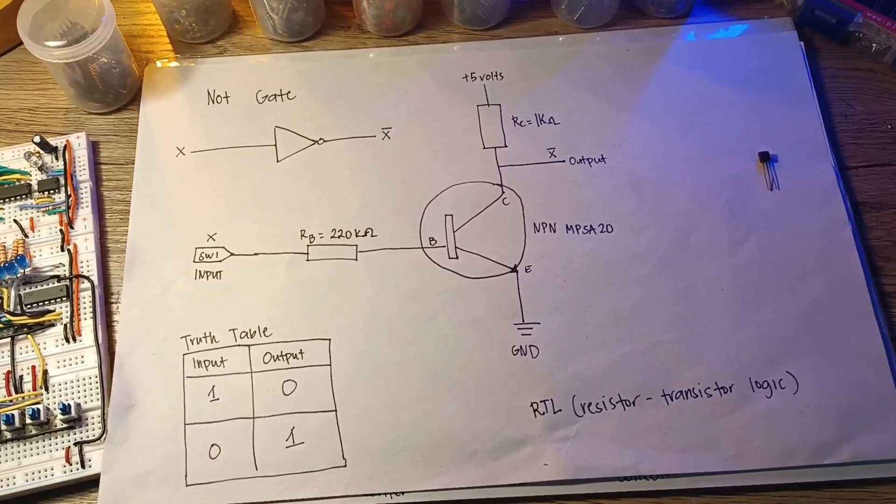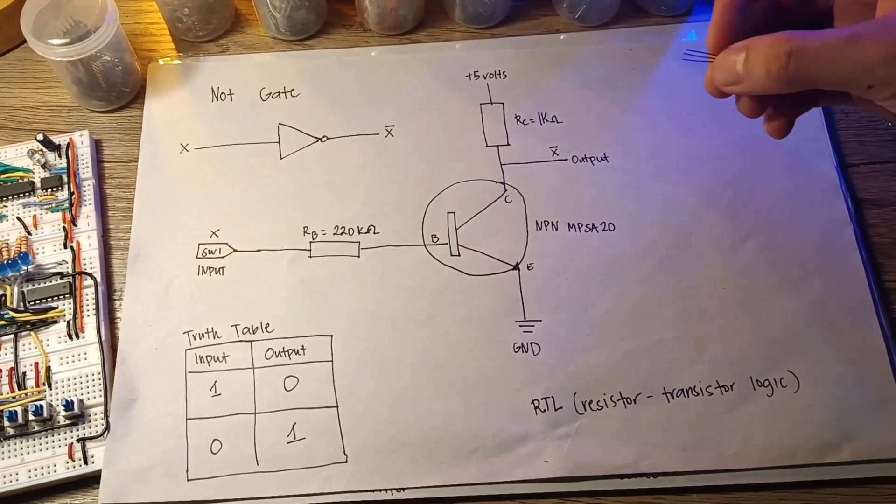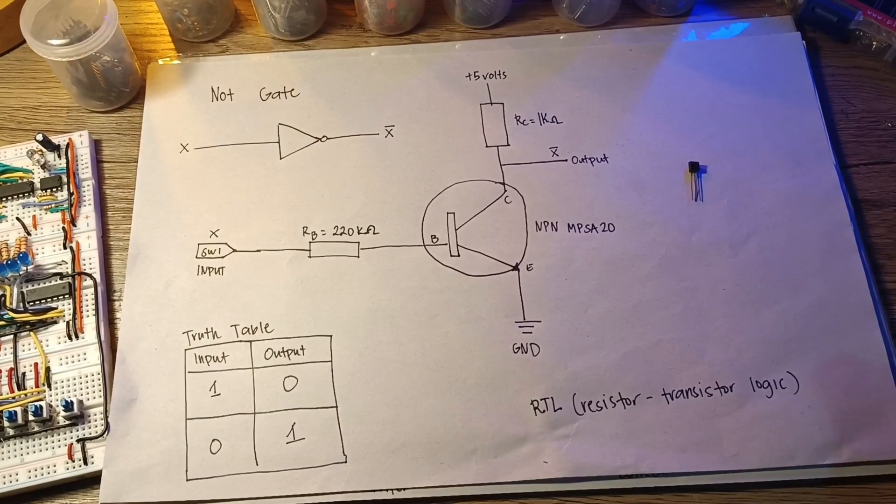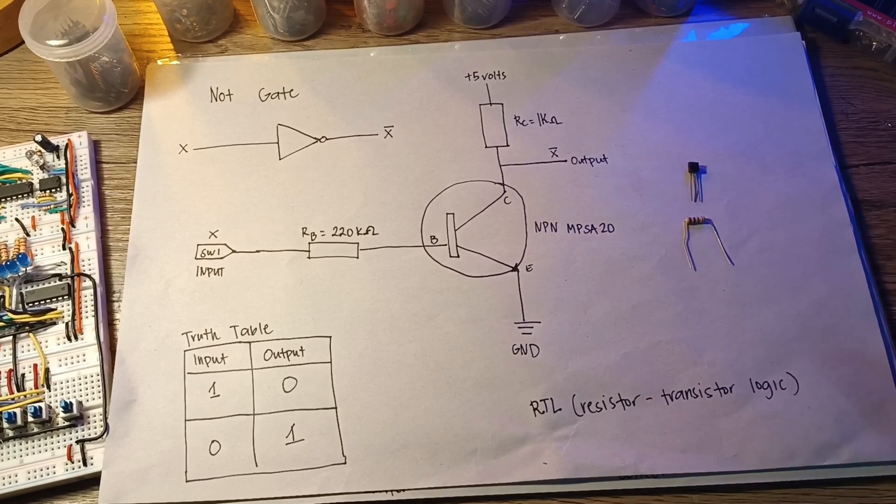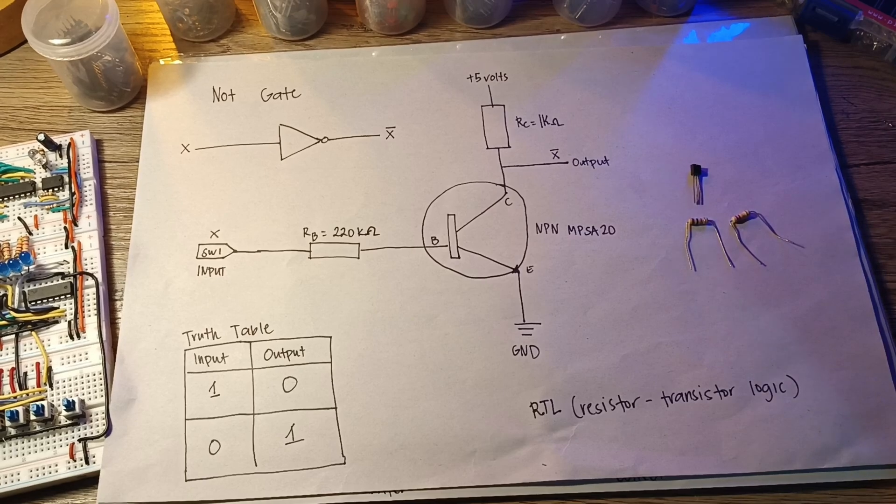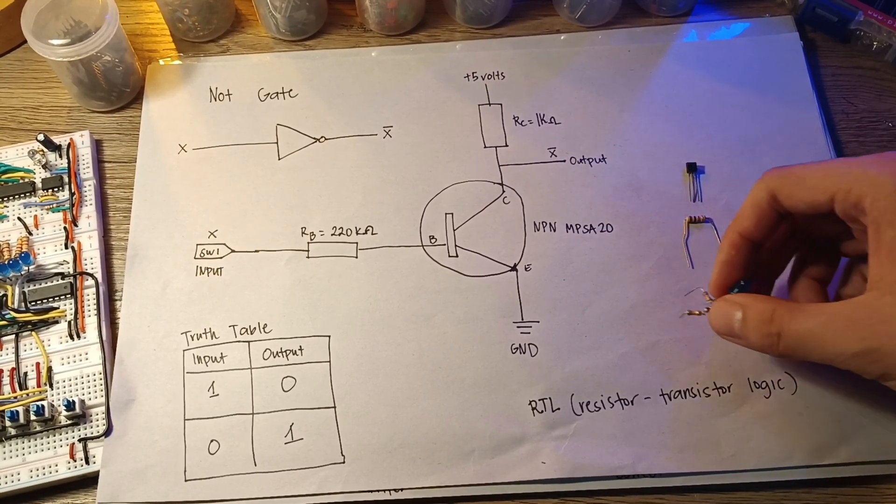To demonstrate it, we will be making this whole circuit. What we need is one MPSA-20, a 1kohm resistor, a 220kohm resistor, and some LEDs and wires.